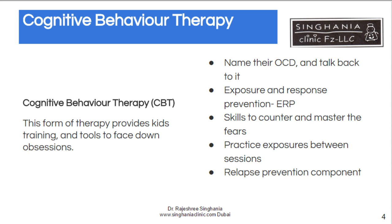Another important technique is Exposure and Response Prevention, also known as ERP. After identifying the obsessions, the child is gradually exposed to them in gradual doses and taught to relax. It's a very gradual program that requires a lot of support from parents, family, and school. ERPs are performed repeatedly to increase the ability to respond to that stress, and practice is very important to prevent relapses.